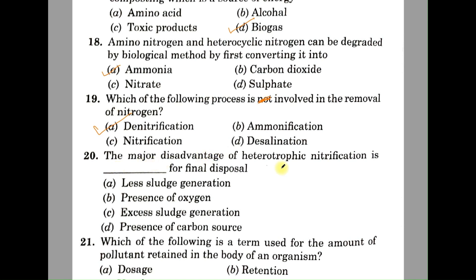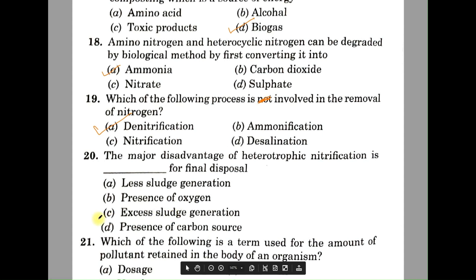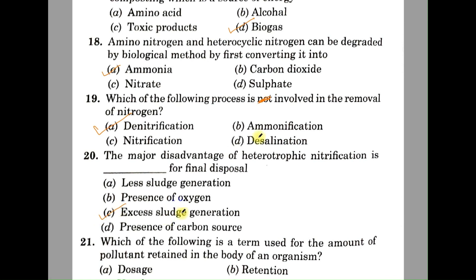Question number twenty: the major disadvantage of heterotrophic nitrification is the production of what for final disposal? A: lesser generation, B: presence of oxygen, C: excess sludge generation, D: presence of carbon source. The correct answer is C, excess sludge generation.